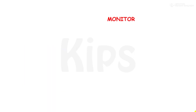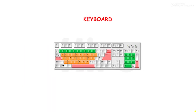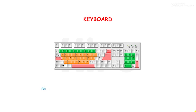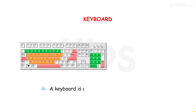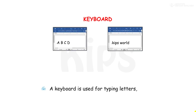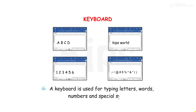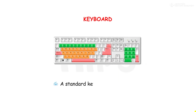Now let's talk about Keyboard. A keyboard has many buttons which are called keys. A keyboard is used for typing letters, words, numbers and special symbols. A standard keyboard has 104 keys.